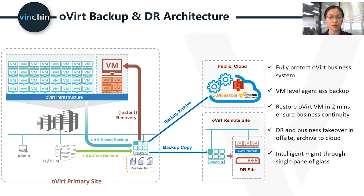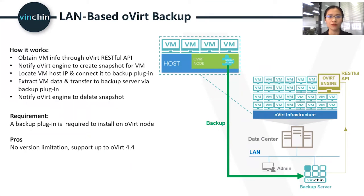To backup oVirt, we adopt two mechanisms: LAN-based backup and LAN-free backup. For LAN-based backup, a backup plugin is required to install on an oVirt node. The backup server first obtains VM information through oVirt RESTful API and notifies the oVirt engine to create snapshots for the VM. Then the backup server detects the IP of the host, connects to the backup plugin, extracts data from the oVirt VM, and transfers it to backup storage. Once transferred, it notifies the oVirt engine to delete snapshots. This mechanism covers all oVirt versions, including version 4.4.